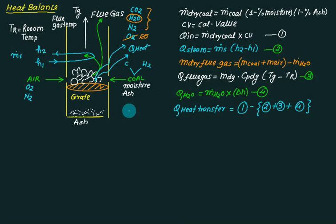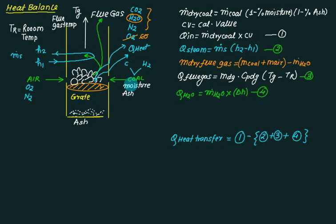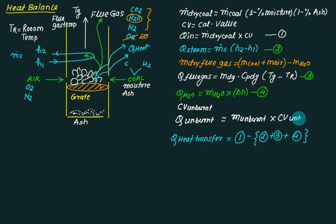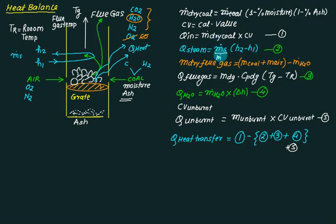In the numerical, a calorific value of unburned fuel may be given. Heat for unburned fuel equals mass of unburned fuel multiplied by the calorific value of unburned fuel — that is equation number five. Dividing all quantities by mass of coal gives the heat balance sheet per kg of coal fired.